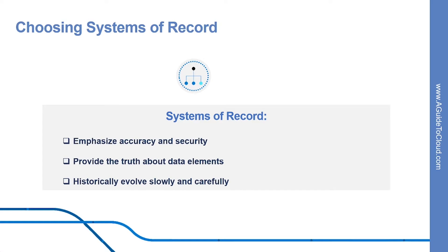Systems that are considered to be providing the truth about data elements are most often called systems of record. These systems have historically evolved slowly and carefully. For example, it is crucial that a banking system accurately reflects your bank balance. Systems of record emphasize accuracy and security.